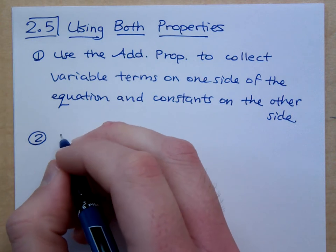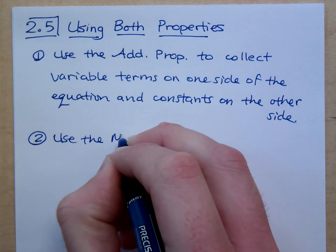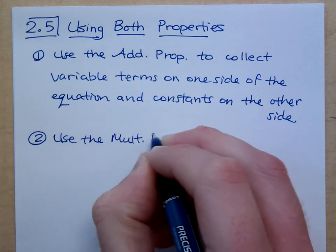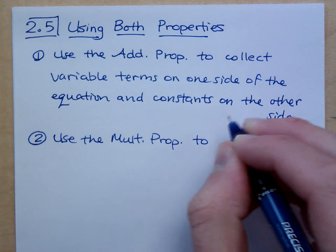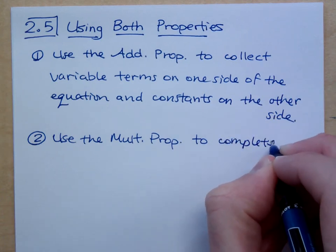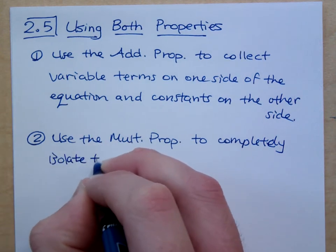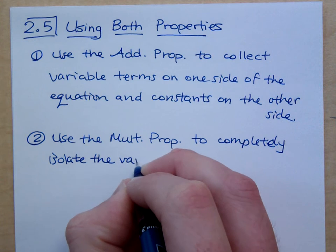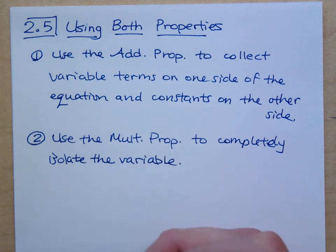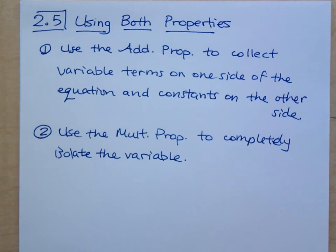And then the second step is that we use the multiplication property to completely isolate the variable. Remember, we don't solve for 2x, we don't solve for negative x. We solve for plain positive 1x, or y, or whatever the variable happens to be.